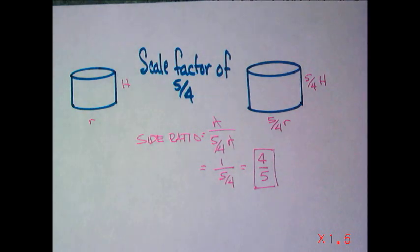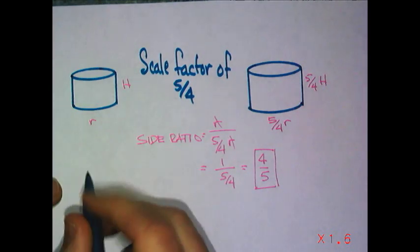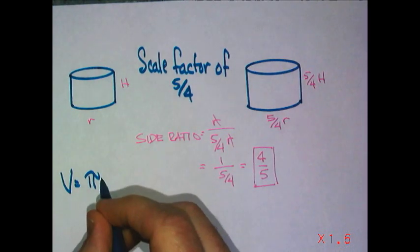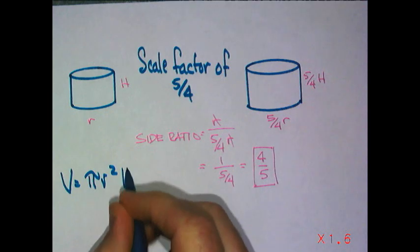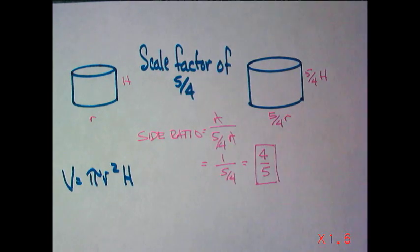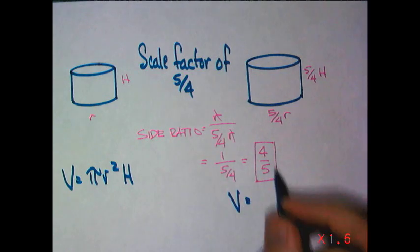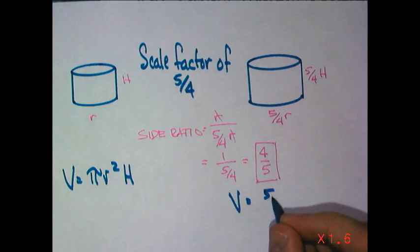Volume, volume, volume. The volume of this one, well that's just the formula. Pi r squared multiplied by h. The volume of this one, the big one, is going to be 5 fourths r squared,